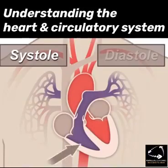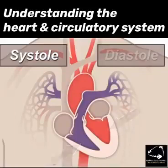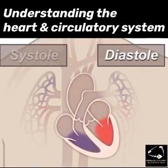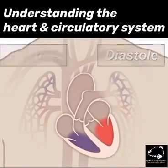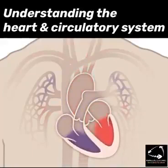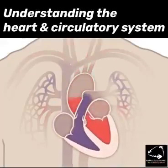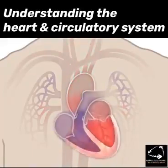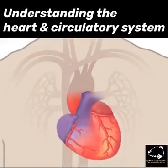Diastole is where the heart is relaxing, and at this point the atria drop the blood into the ventricles. So it's a continual cycle between systole and diastole, and this creates the blood flow. Systole is the contraction; diastole is the relaxation phase.